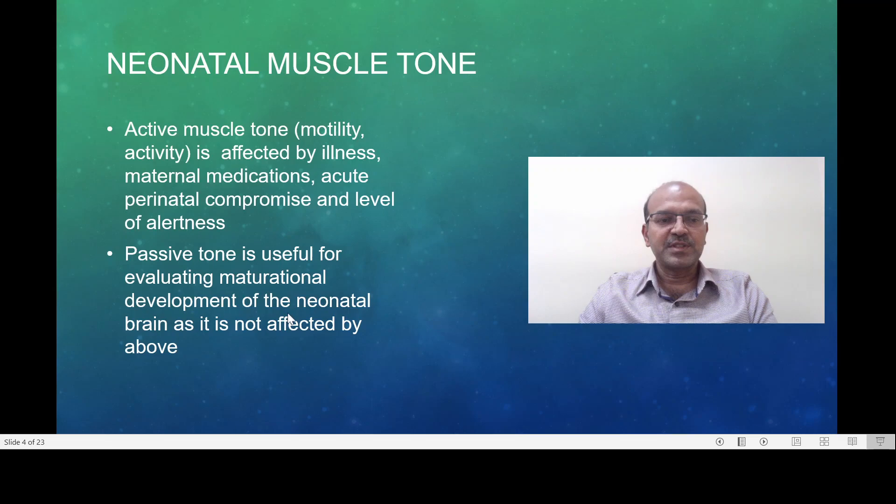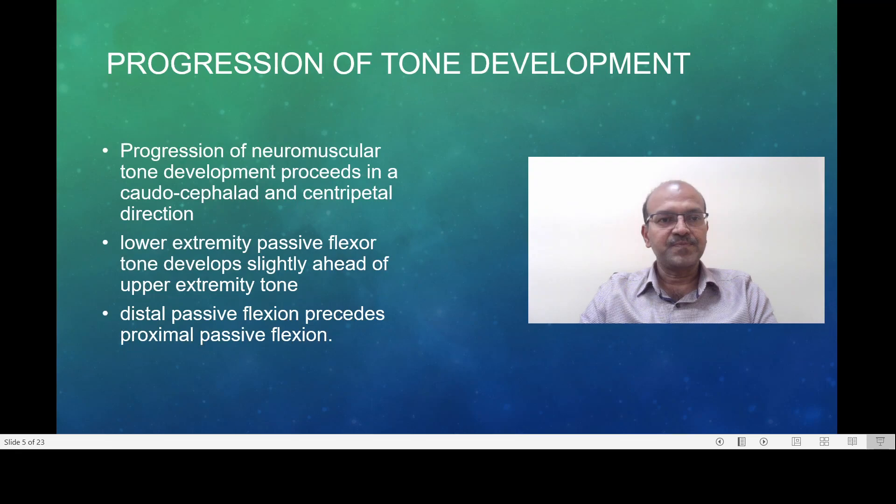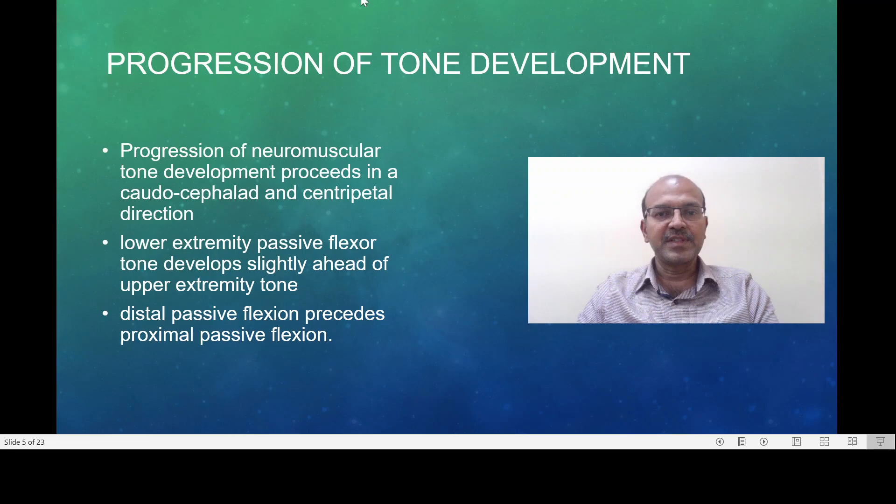The passive tone is useful for evaluating maturation development as it is not affected by the above. So most of the tests which are used in the Ballard score, for example, depends on eliciting passive tone in different ways. The basis for the neuromuscular aspect of the Ballard scoring is the progression of the tone development. And the same applies to the physical parameters as well.